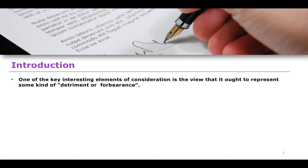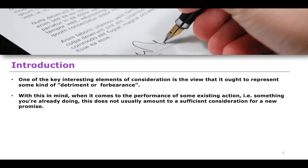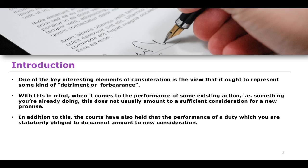Detriment or forbearance means something that is depriving you of something you have, whether that be money, an object you are giving over, or even your time and energy in performing some kind of service. With this in mind, when it comes to the performance of an existing action — something that you are already doing — this does not usually amount to sufficient consideration for a new promise. When creating a new contract, we have to think about a new detriment and a new forbearance in relation to the action being performed.